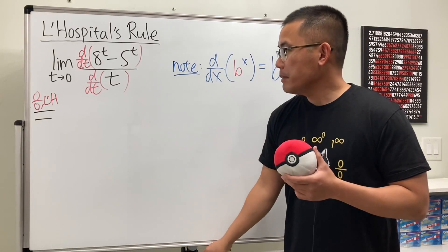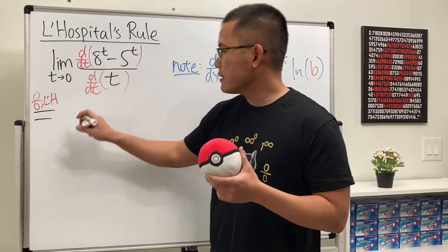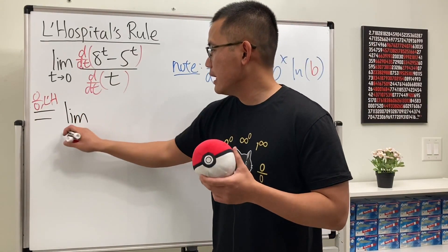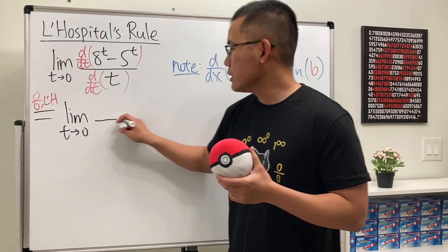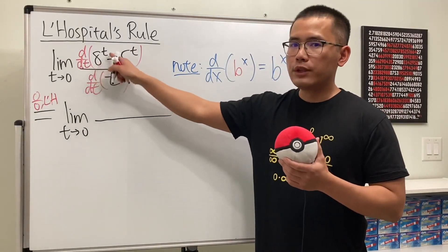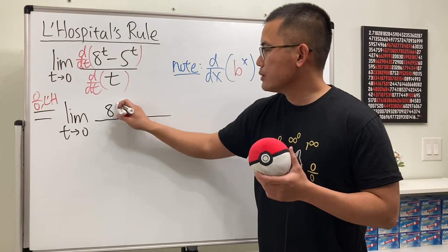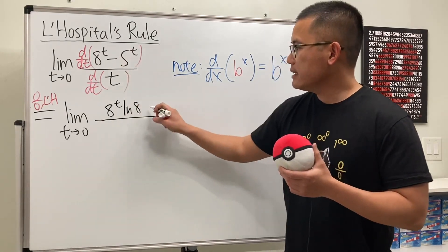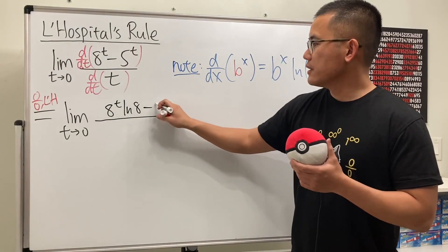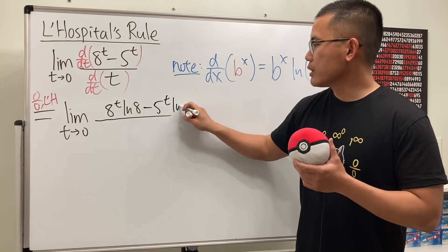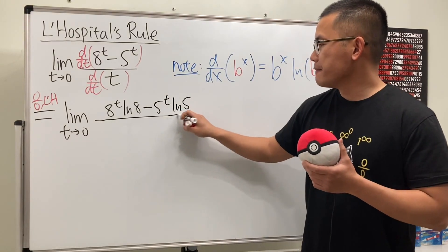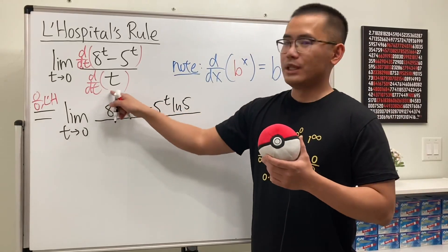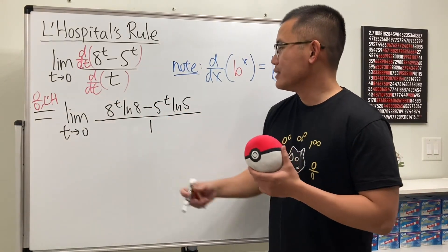So coming back here, after L'Hospital's rule, we still have the limit as t goes to 0. The derivative of 8^t will be 8^t, but we multiply by ln8. And then minus the derivative of this is 5^t, and then multiply by ln5. And the derivative of t is just equal to 1. So that's what we have.